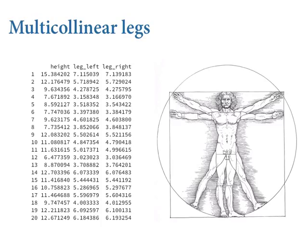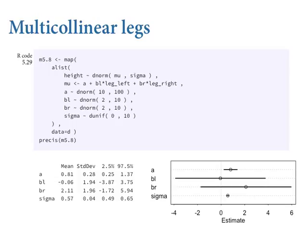I assert — and I simulated the data so I know it — that you can predict a person's height knowing the length of their legs, either leg. However, I want to show you that a linear regression cannot predict height with both legs. We fit a linear regression predicting height as a Gaussian function with a linear model of the left leg and the right leg, with separate coefficients. Both should turn out positive, right? But they don't.